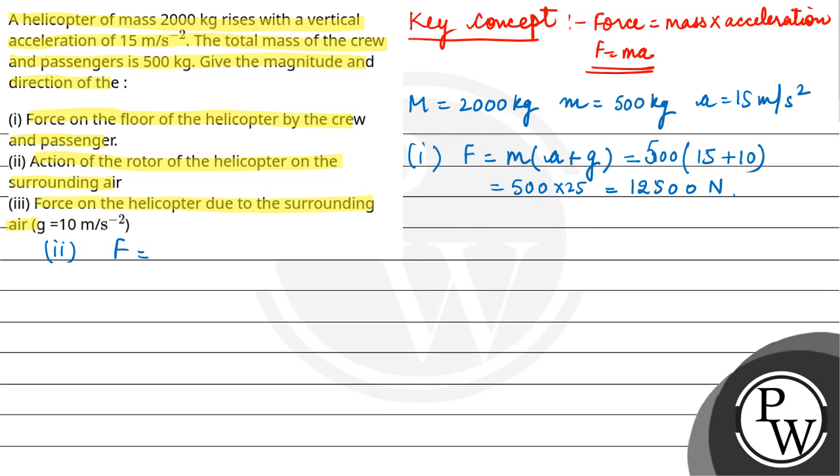Now here this is helicopter's action, so helicopter's mass plus internally whatever things are there, the passengers and crew, their mass, and acceleration a plus g.